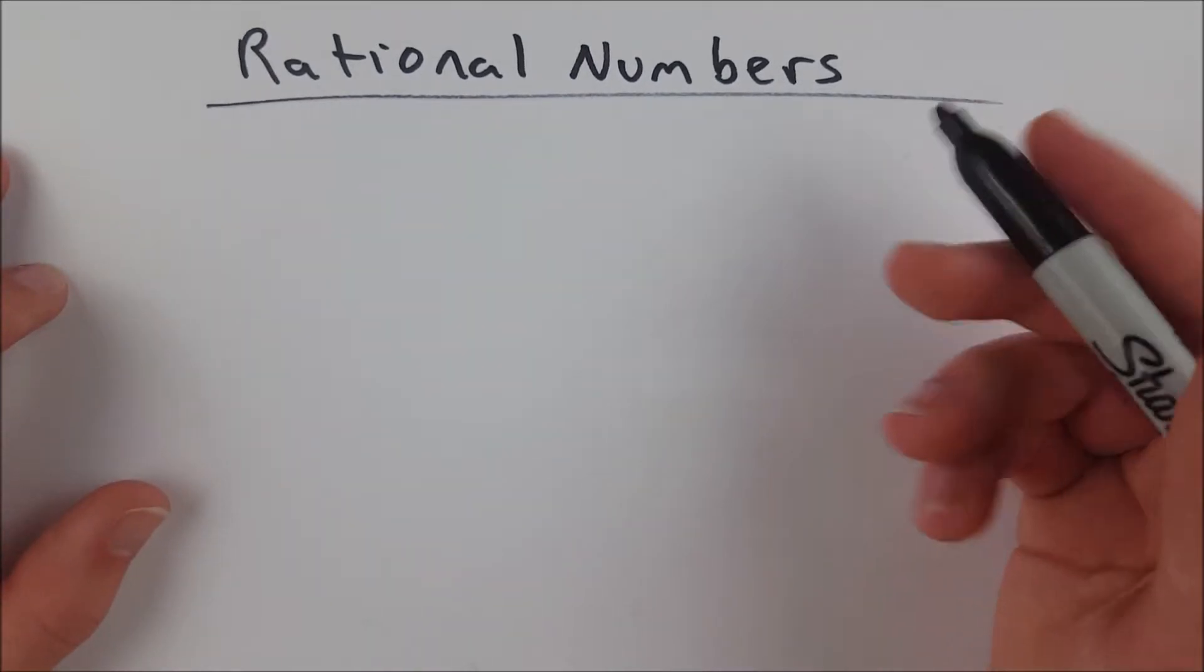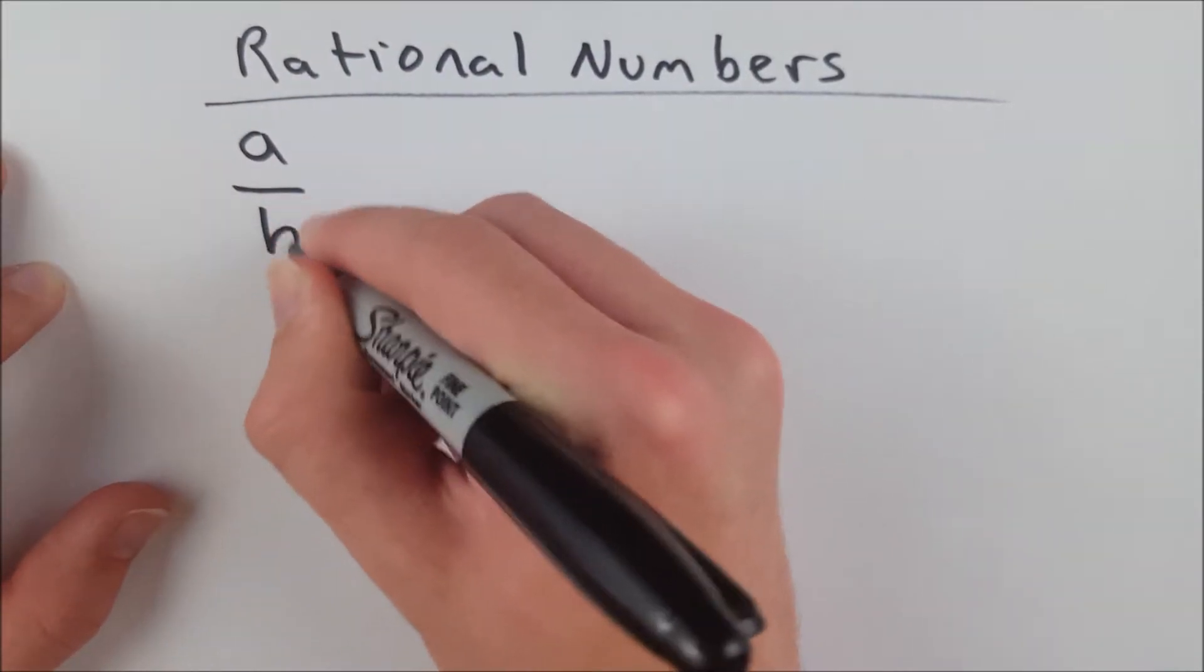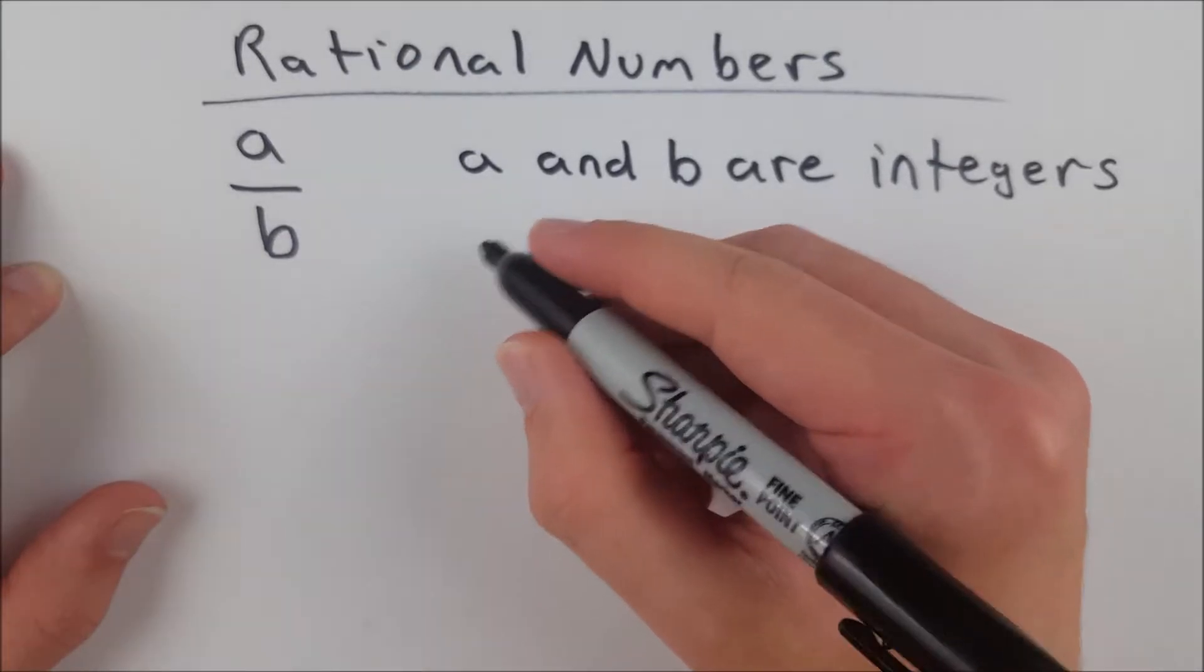What are rational numbers? A rational number is any number that can be written in the form A over B, where A and B are both integers, and B is not equal to 0.